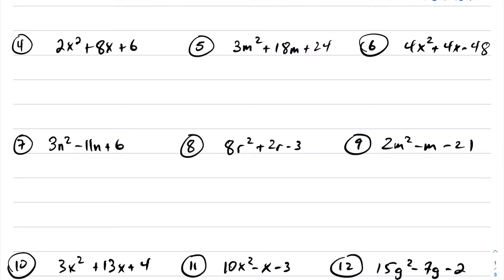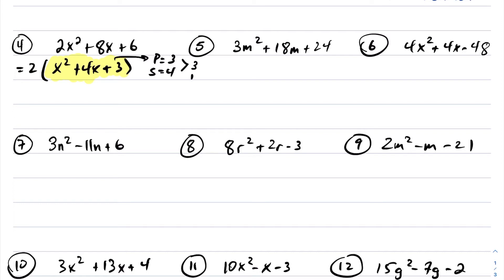With these next questions, it appears I do not have a simple trinomial. But whenever you factor, look to see whether there's a GCF. This one has a GCF of 2, leaving me with x squared plus 4x plus 3. Now inside the brackets I'm left with a simple trinomial. Two numbers that multiply to be 3 and add to be 4 are 3 and 1. So this factors into 2 times x plus 3 times x plus 1.